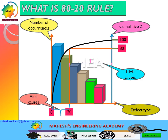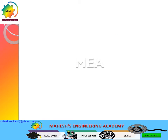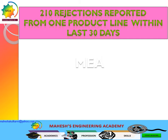These are also known as vital causes, and the rest are known as trivial causes. Let's take a case study and understand how to create a Pareto analysis when you don't have any statistical software like Minitab or Statistica. 210 rejections are reported from one product line within the last 30 days — this is the problem statement.